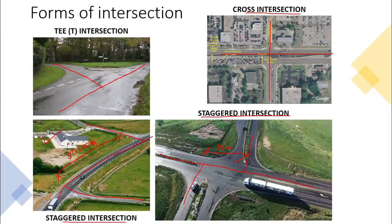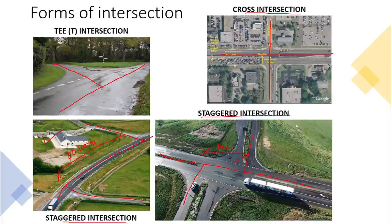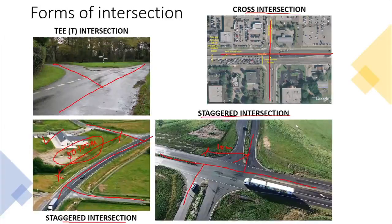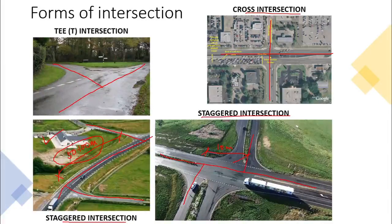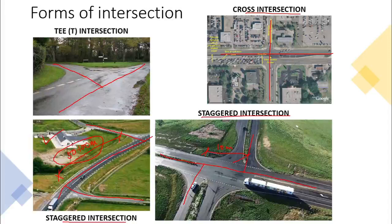Staggered intersections are useful when you want to keep vehicles moving and avoid queue formation. A staggering of around 100 meters is useful. This type is also seen in many urban areas to decongest and avoid queues. In Mumbai, a lot of traffic signals have a staggered intersection kind of arrangement.